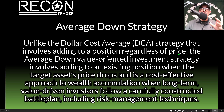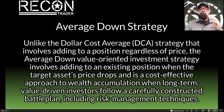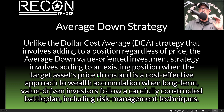Just quickly, if you're not familiar with an average down strategy — unlike a dollar cost average strategy, which I absolutely hate, that involves adding to a position regardless of price, essentially buying both high and low — that is why I prefer the average down strategy, which is a value-oriented investment strategy involving adding to an existing position when the target asset's price drops. So you're actually buying at a lower price rather than a higher price.